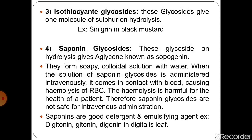The third category is isothiocyanate glycosides. These glycosides yield one molecule of sulfur on hydrolysis. For example, sinigrin in black mustard.